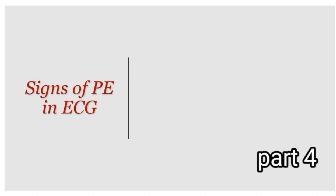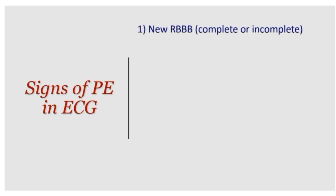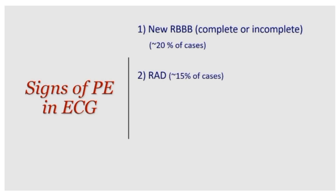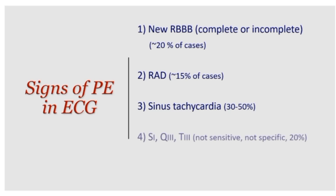We've talked about signs of PE in ECG last week — let's reinforce and review. New right bundle branch block, whether complete or incomplete, is seen in about 20% of PE cases. Axis deviation occurs in about 15% of cases, sinus tachycardia in 30 to 50%, and S1Q3T3 is seen in about 20% of cases — it is not sensitive and not specific.